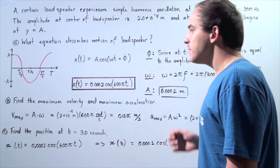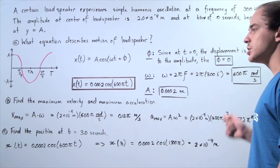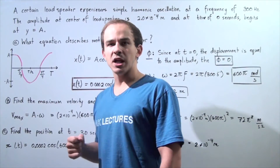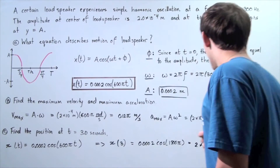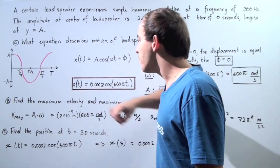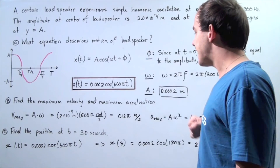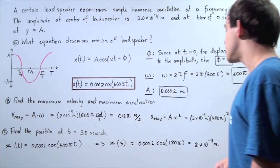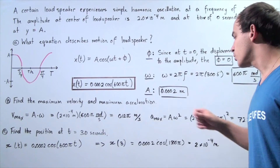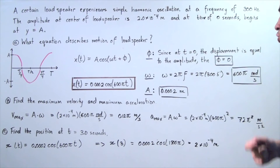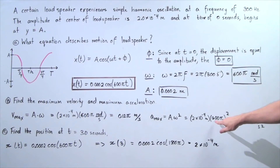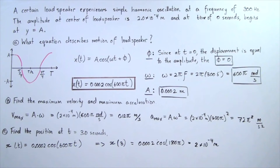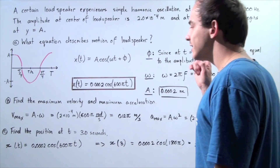For part B, find the maximum velocity and maximum acceleration. The formula for maximum velocity is simply omega multiplied by the amplitude. Omega is 600 pi, so we have 600 pi multiplied by 0.0002, and we get 0.12 pi meters per second as the maximum velocity. For maximum acceleration, it is the product of the amplitude and the square of the angular frequency: 600 pi squared multiplied by 2 times 10 to the negative 4 meters, giving 72 pi squared meters per second squared as the maximum acceleration of the loudspeaker.